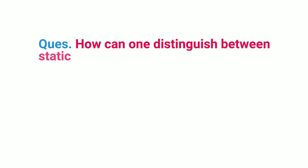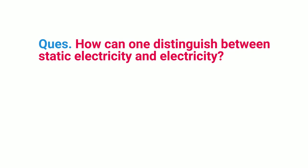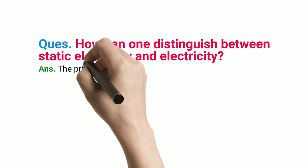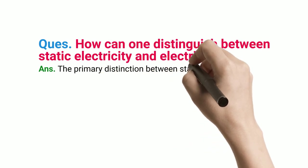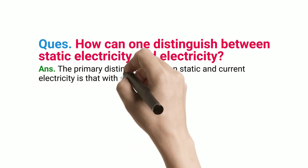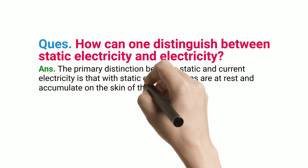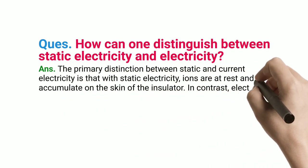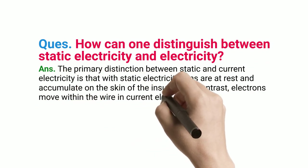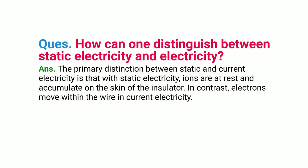Q: How can one distinguish between static electricity and current electricity? The primary distinction is that with static electricity, ions are at rest and accumulate on the surface of the insulator. In contrast, electrons move within the wire in current electricity.